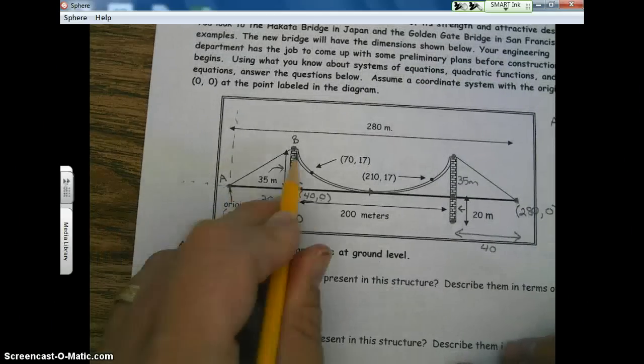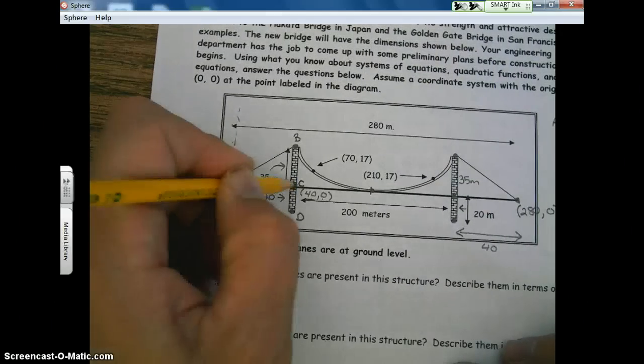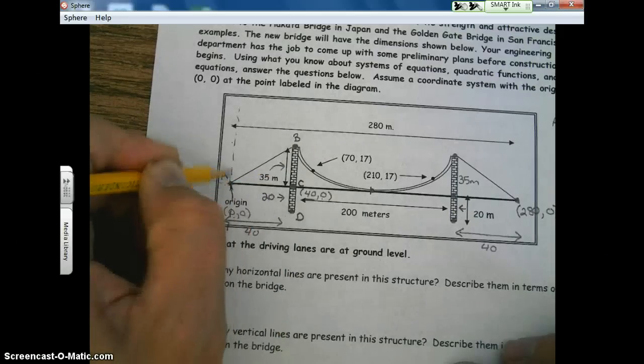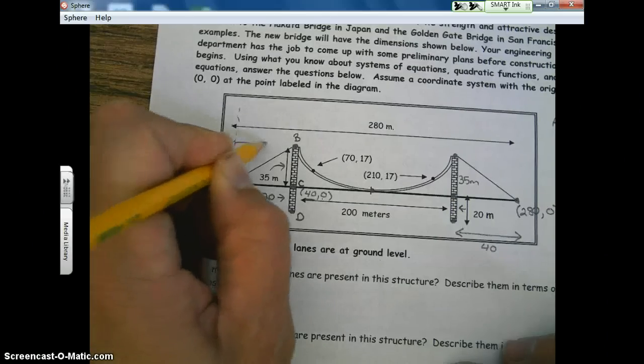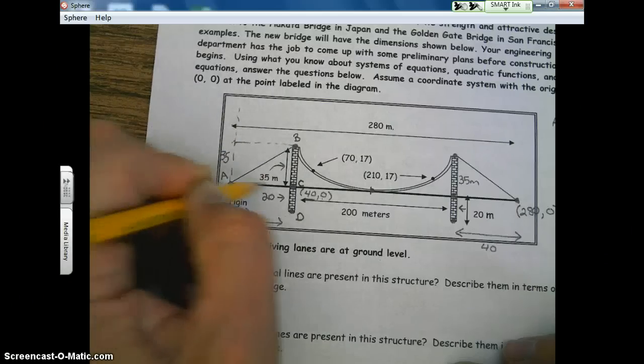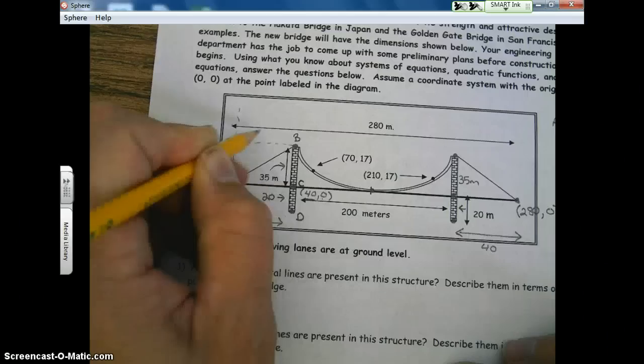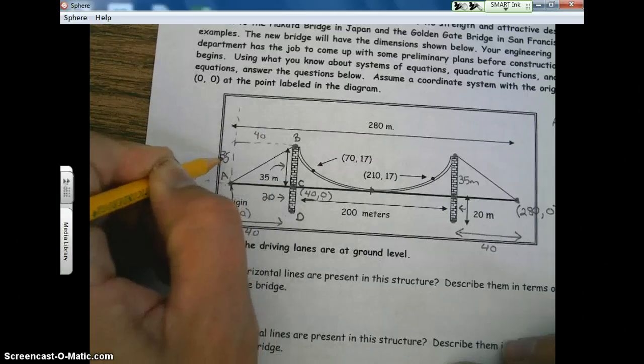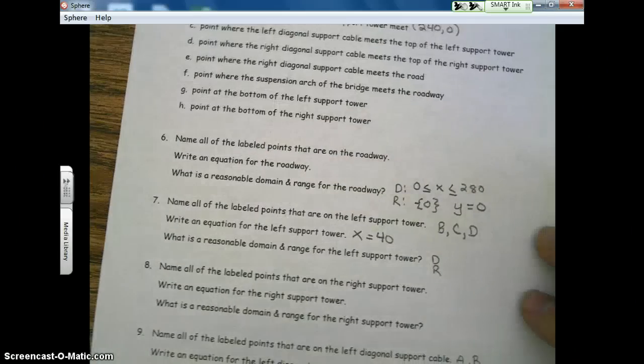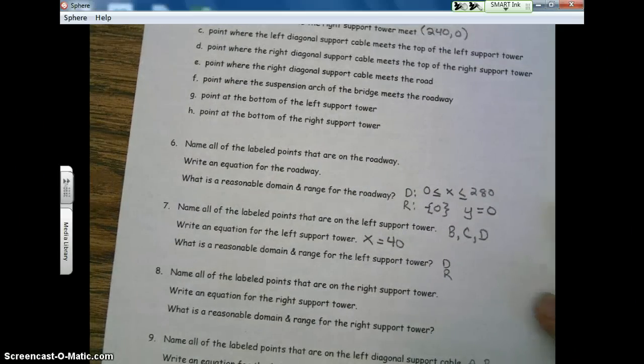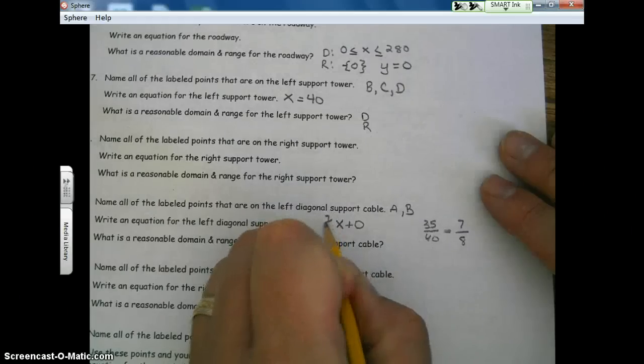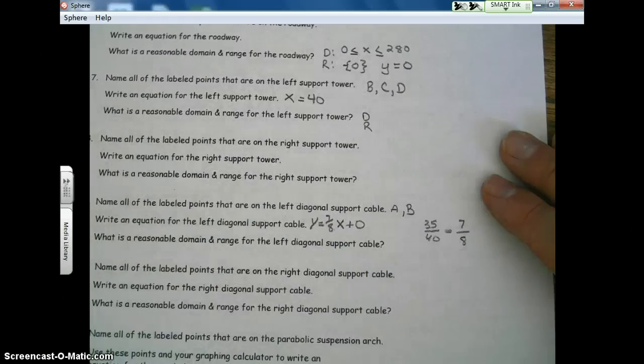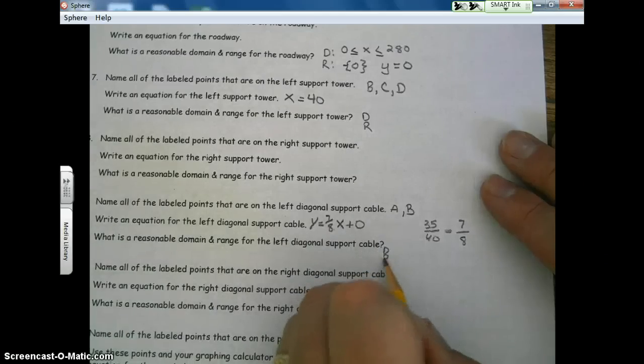So we would start off with plus zero, which most of you know, we don't have to write plus zero. Now we want to come up with our slope. So to get from this point to this point, I would rise, how tall? 35. Rise 35. And then how far would I have to run? And if you remember, that was 40. So our slope is 35 over 40. Let's reduce that fraction. 5 goes into 35 seven times. 5 goes into 40 eight times. So seven eighths equals Y. And we're going to do the domain and range again.